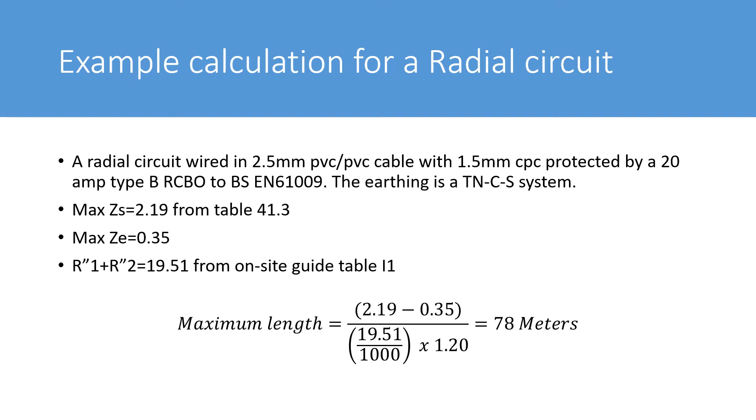So here we have an example calculation for a radial circuit. A radial circuit wired in 2.5 mm PVC-PVC cable with a 1.5 mm CPC protected by a 20 amp Type B RCBO to BSEN61009. The earthing system is a TNCS or PME system.